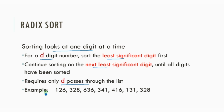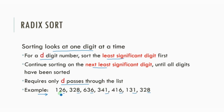For example, consider this list. First, the numbers will be sorted based on the least significant digit, or the last digit — that is 6, 8, 6, 1, 6, 1, and 8. After that, the numbers will be sorted based on the next least significant digit, or the second-to-last digit.